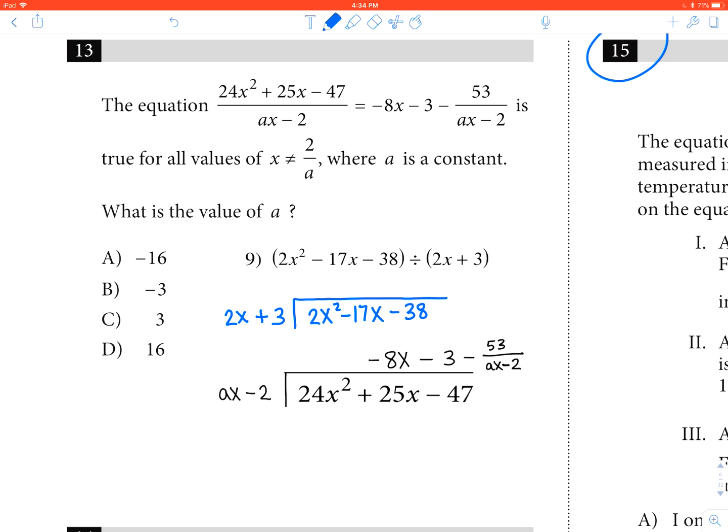How we do long division is we ask this times what equals this? 2x times x would equal 2x squared. And that's the only part of polynomial division we need to be able to figure this question out.